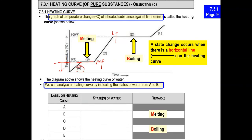For the temperature below the melting point, remember that it is the solid state. Above the melting point, the animation will show you that it is in the liquid state. And above the boiling point, it has to be in the state of a gas.